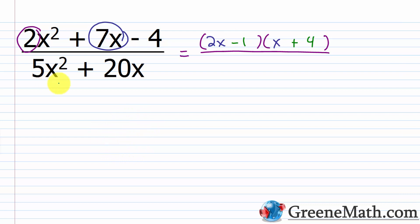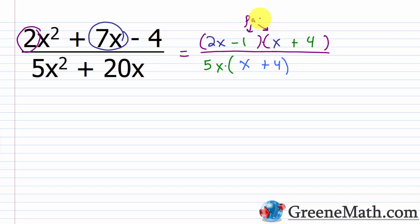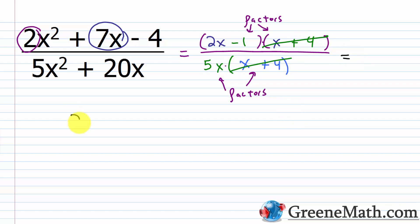For the denominator, I pull out the GCF of 5x, leaving (x + 4) inside the parentheses. So the denominator is 5x(x + 4). Now I stress: this is multiplication — (2x - 1) is multiplied by (x + 4) in the numerator, and 5x is multiplied by (x + 4) in the denominator. These are factors, so I can cancel the common factor (x + 4). I'm left with (2x - 1) over 5x as the simplified version.